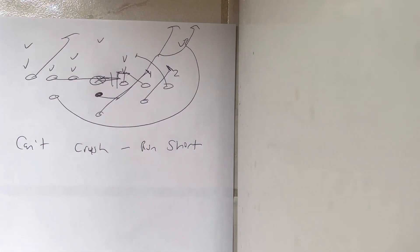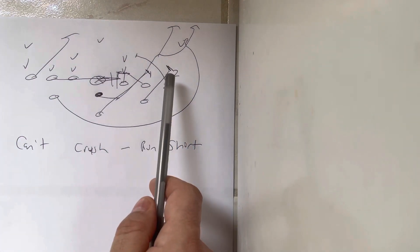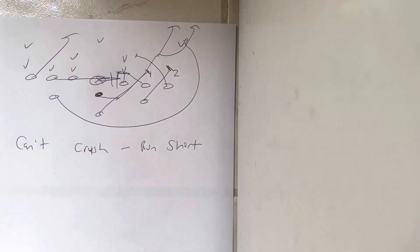The A back, instead of wedging with the tackle now, is going to kick out number two. He's going to kick out number two, get his helmet to the left, right forearm through him, drive him out of bounds.